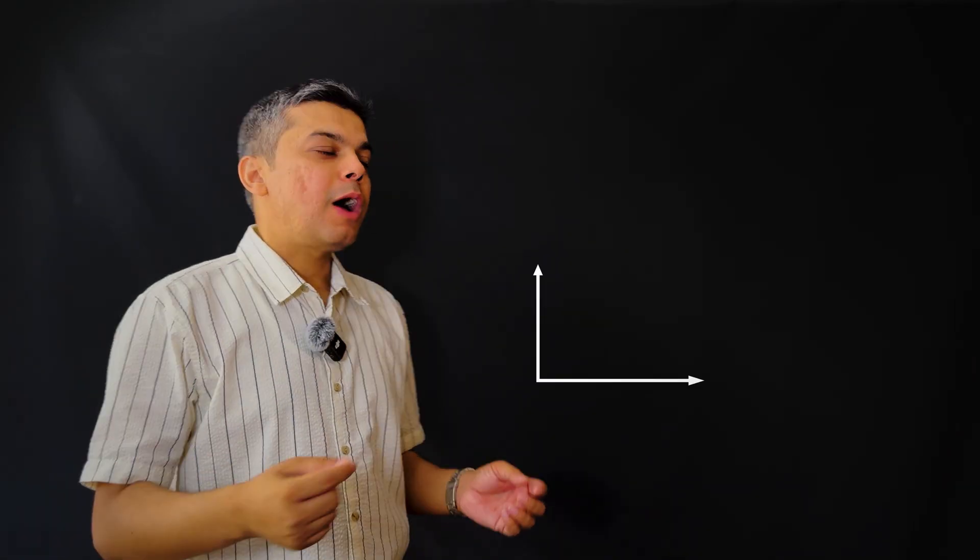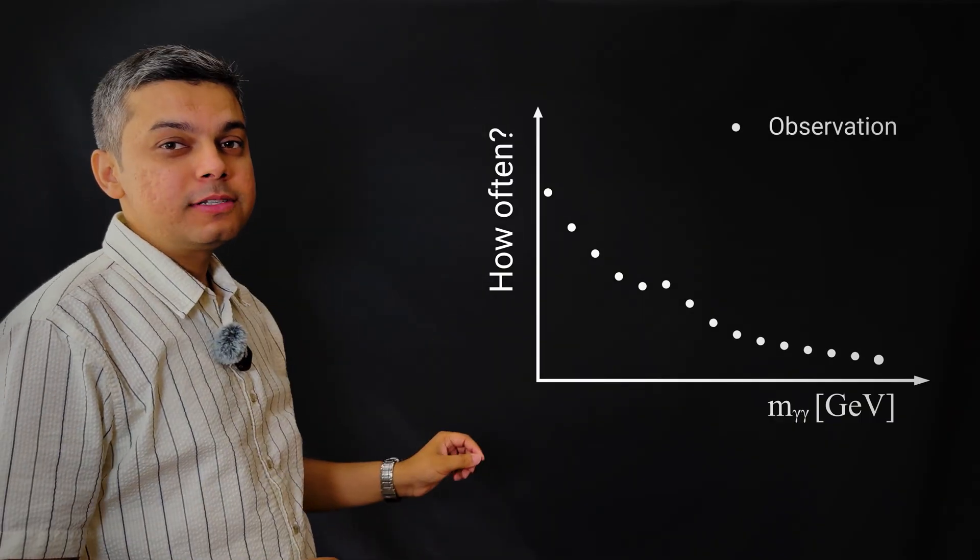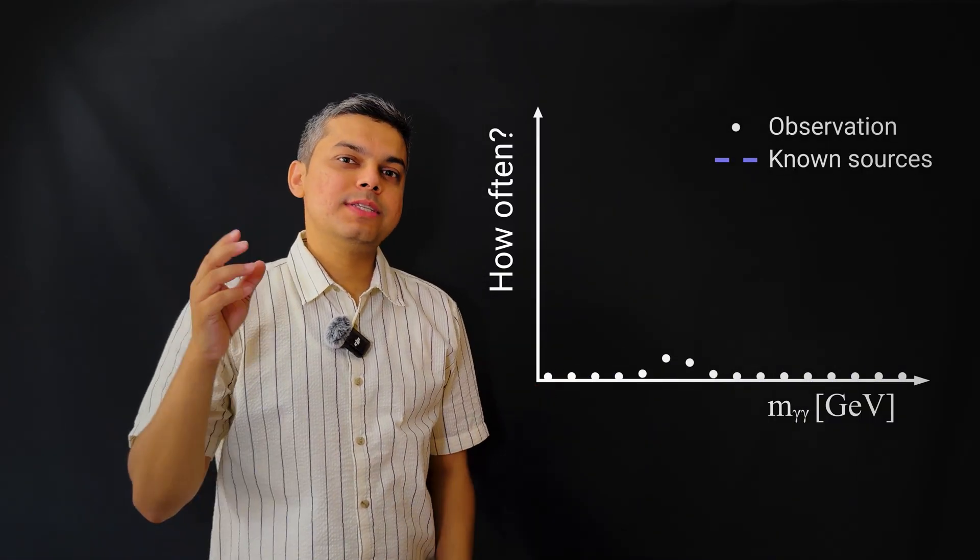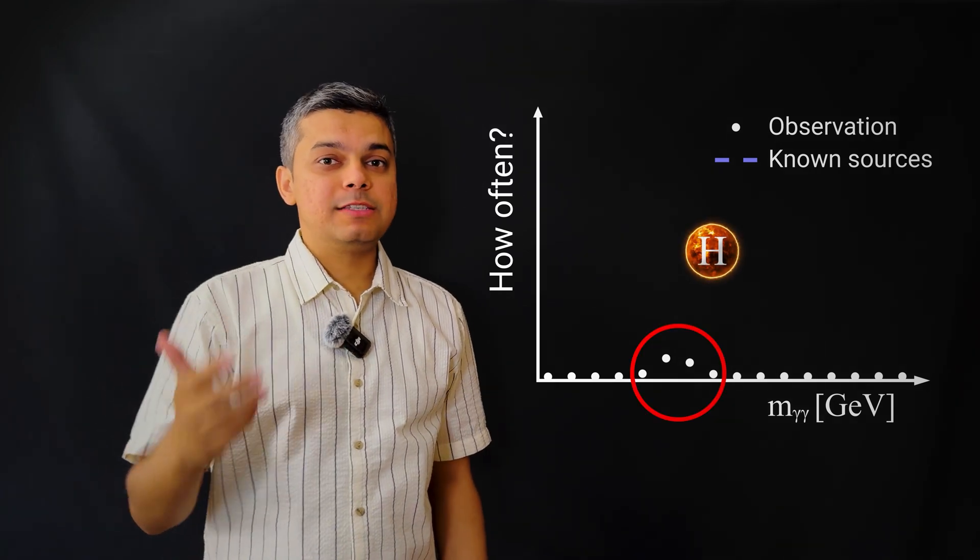At the CMS and ATLAS experiments, scientists counted how often they see two photons, and after subtracting the other known processes that can also produce two photons, what was left was a fingerprint of the Higgs boson.